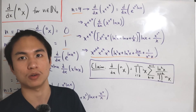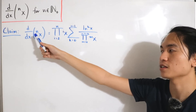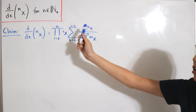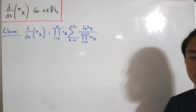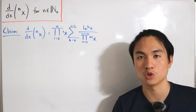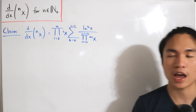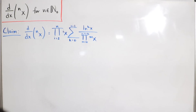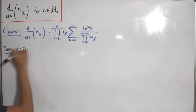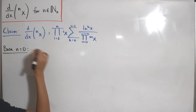To prove this closed formula, we apply mathematical induction. The claim is that the derivative of the nth tetration equals that combination of partial products and partial sums. We need to verify the base cases and then show the n+1 case follows. We'll do base cases for both n=0 and n=1, since some textbooks include zero in the natural numbers.